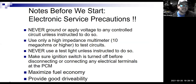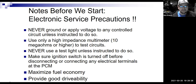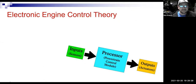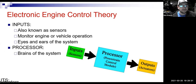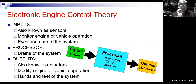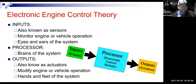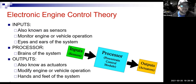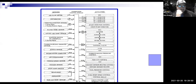People want to jump in their car, get in and go — they want it to run clean and get good fuel economy. It requires computer controls to do that these days. Also a note: you never want to use a test light on something unless you're supposed to — safety stuff. Engine control theory: remember that every engine control system has inputs, the computer or processor — the brains of the system — and outputs.